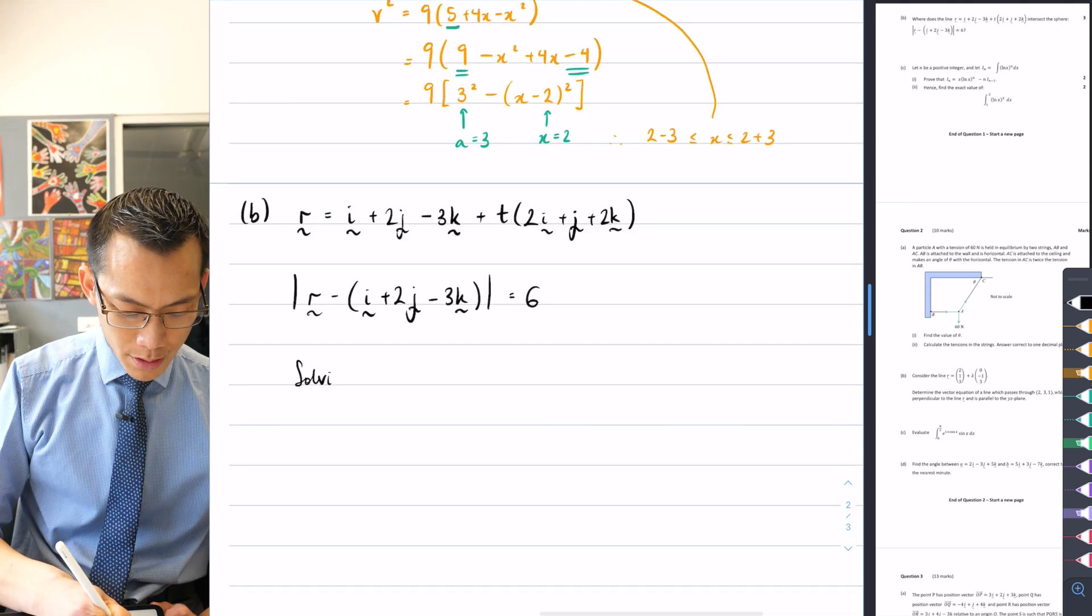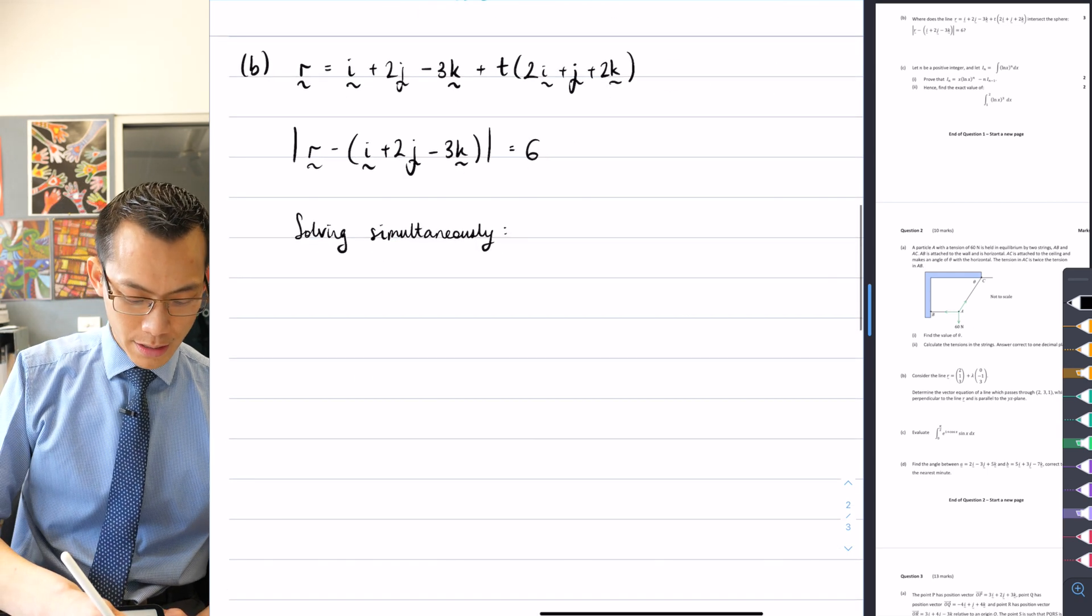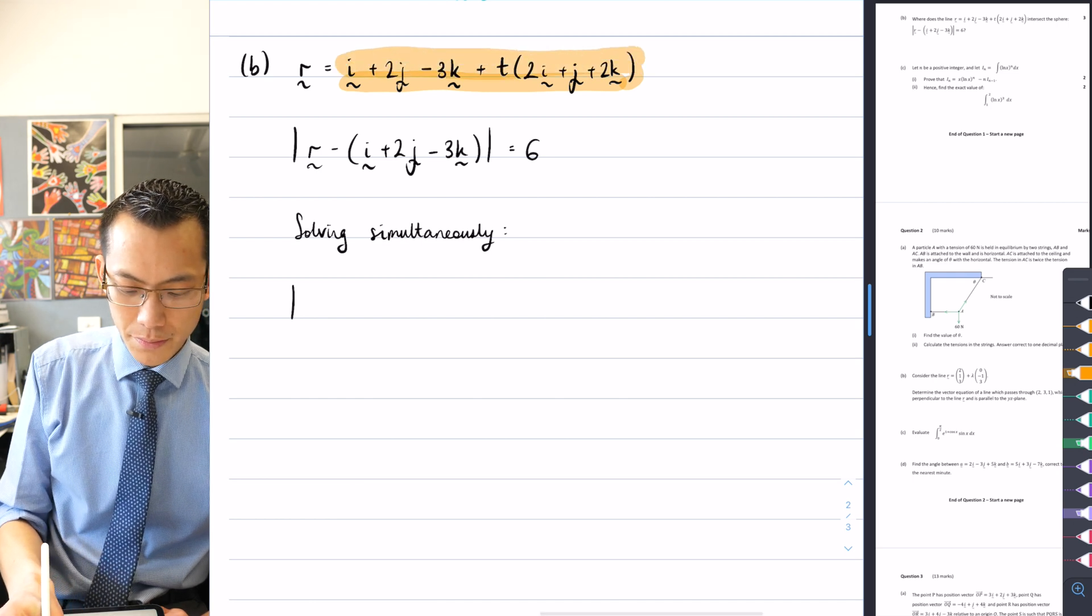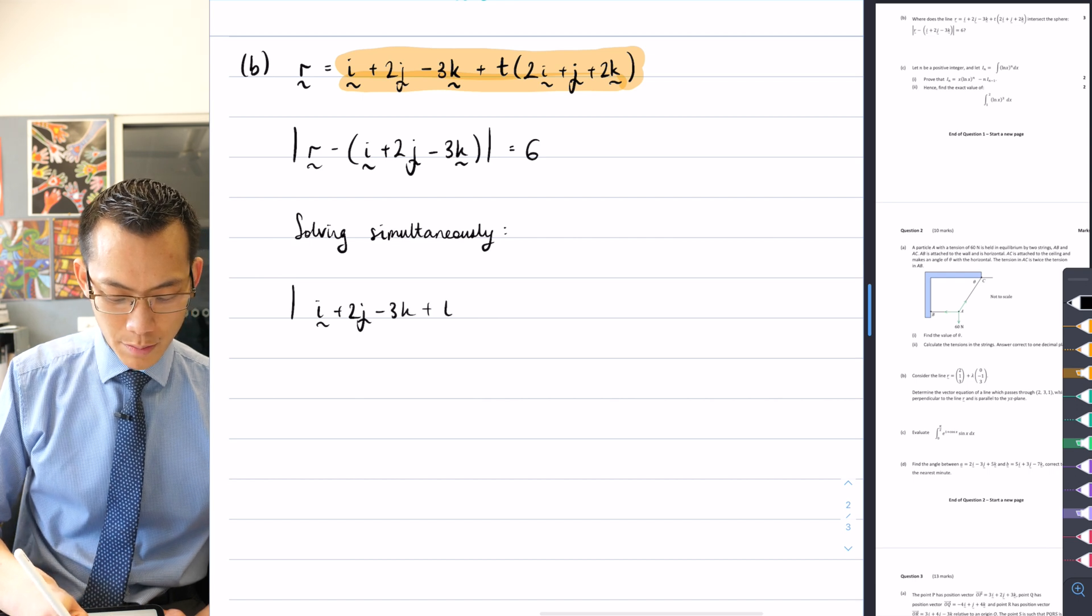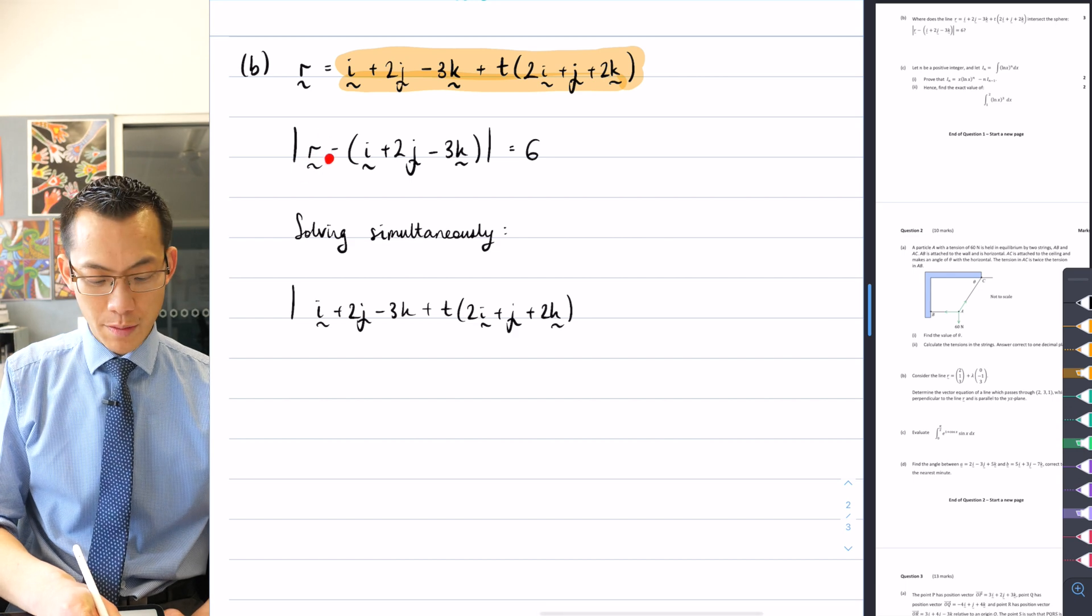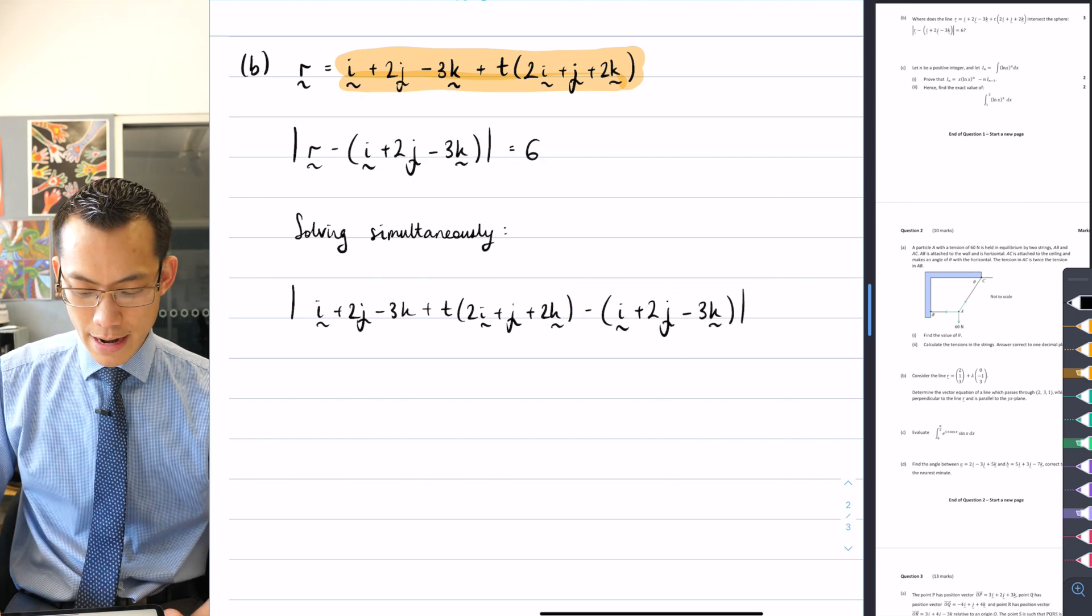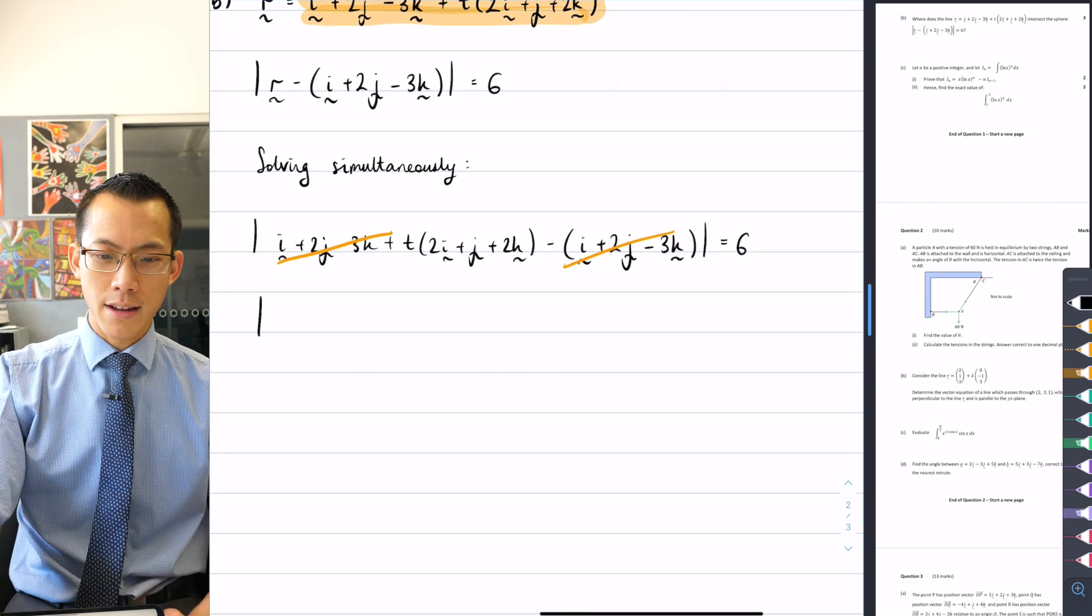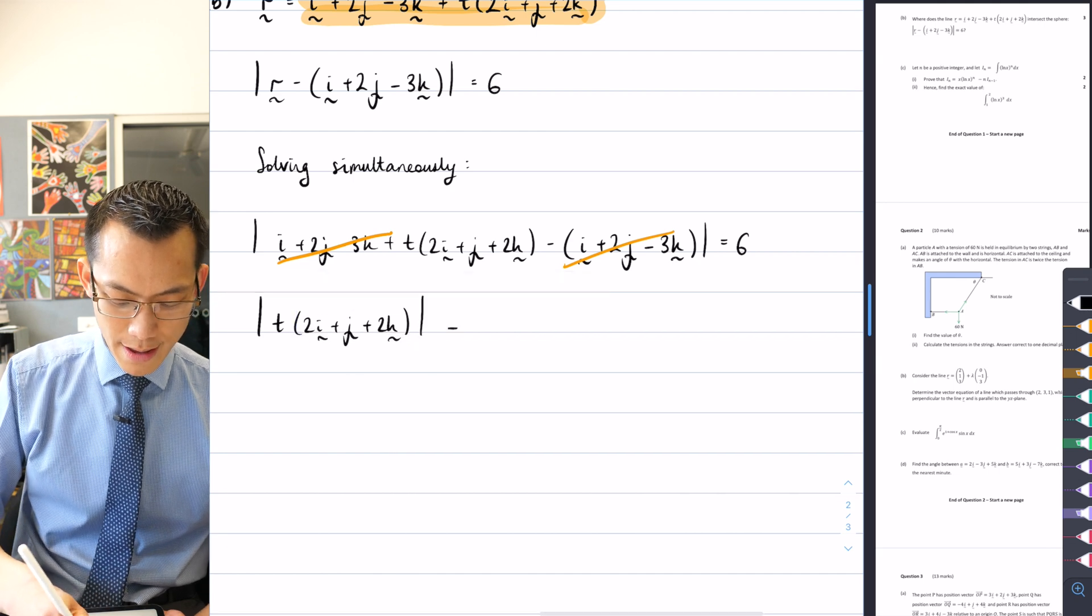So solving simultaneously, what I'm going to do is substitute the line into the sphere equation. That looks like the most straightforward way to do it. So I get i plus 2j minus 3k plus t times 2i plus j plus 2k, and then subtract this same vector. So that equals 6. You can see this is going to cancel with all of this, so that gives me the absolute value of t times 2i plus j plus 2k, and that equals 6.